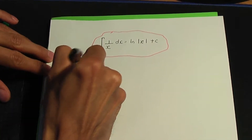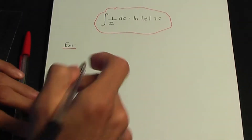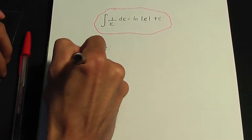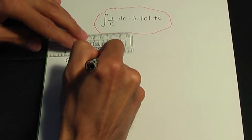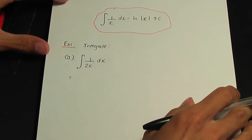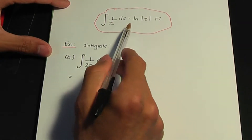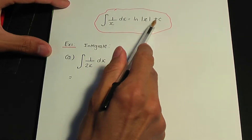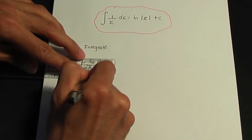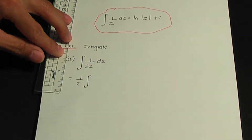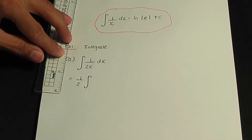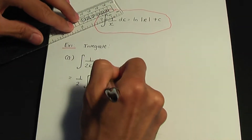Here's example number 1, part a: let's integrate 1 over 2x with respect to x. Remember, going back to that standard result, when you integrate 1 over x with respect to x, the result is ln the modulus of x plus c. To use this result, I'm going to take a common factor of 1 over 2 out of the integral — you can only take a constant out of the integral — leaving me with 1 over x to integrate.